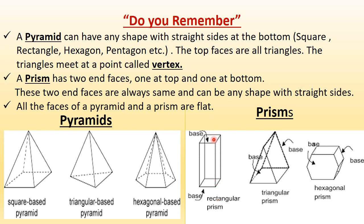Both the bottom face and the top face are same — these two faces are called end faces. One at the top and one at the bottom, and these two end faces are always the same. Both the shapes are the same and it can be any shape with straight sides: it can be a rectangle, a triangle, a pentagon, an octagon — any shape with straight sides. Any shape which has two end faces that are the same means it's a prism. You just care about the end faces.